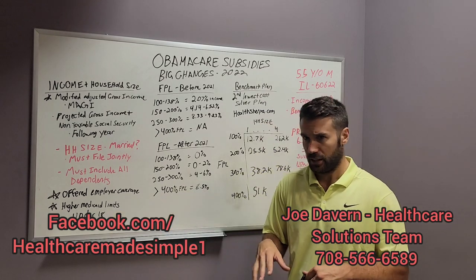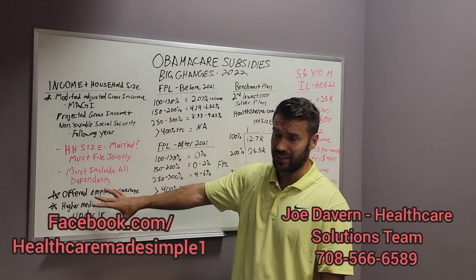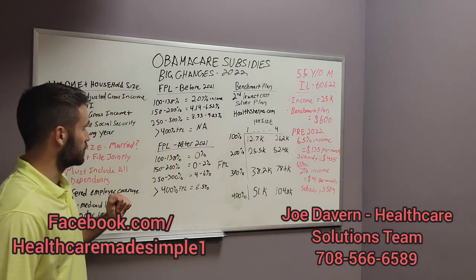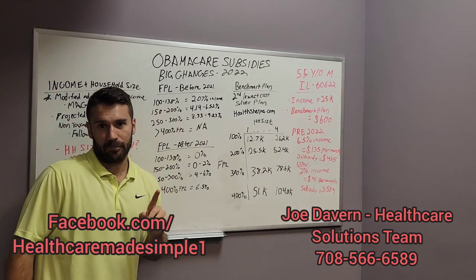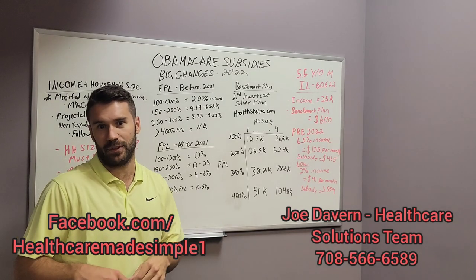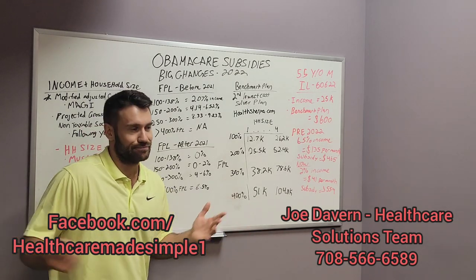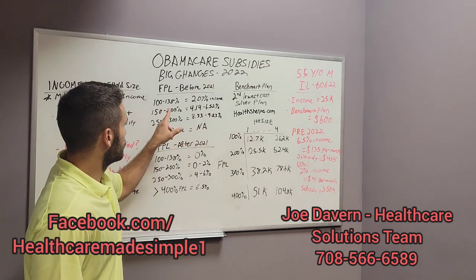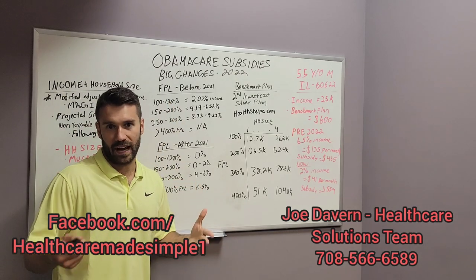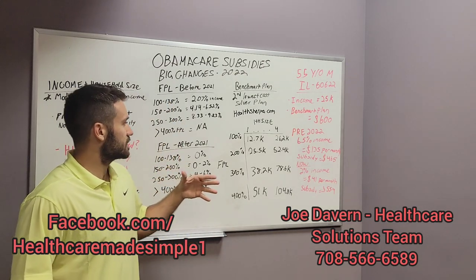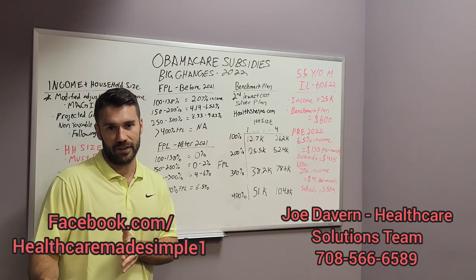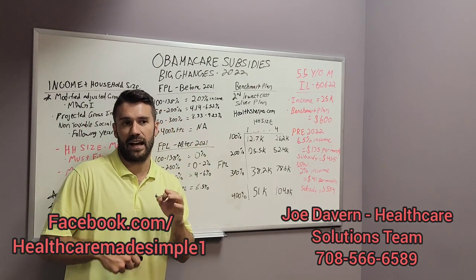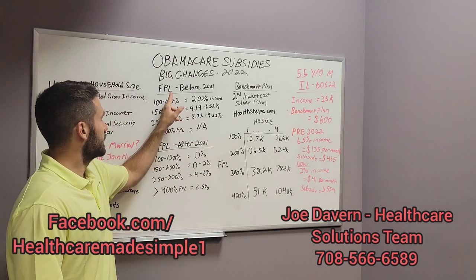We'll talk about Medicaid for kids under 18, but I just want to give you the basics — those are the numbers we're looking for to determine subsidy. This is where it gets interesting and surely confusing. Before 2021, the government has something called the federal poverty level chart. So aside from income and household size, the third thing that helps us determine our subsidy is the federal poverty level.